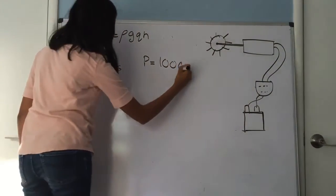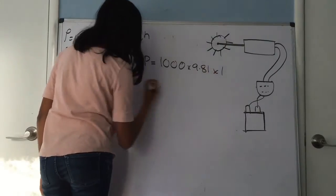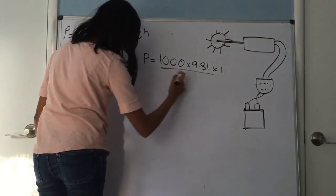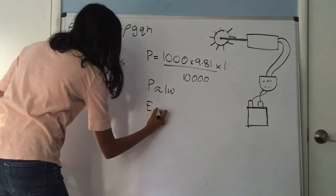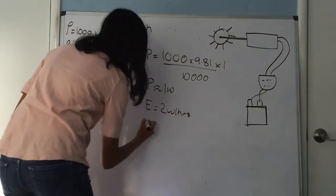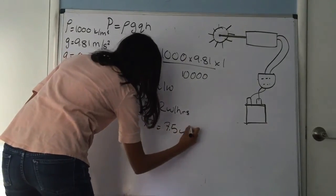Power is equal to 1,000 times 9.81 times 1 divided by 10,000, which is approximately equal to 1 watt. That means the energy is 2 watt-hours. And, in about a day, we can generate 7.5 watt-hours, which is approximately charging three phones.